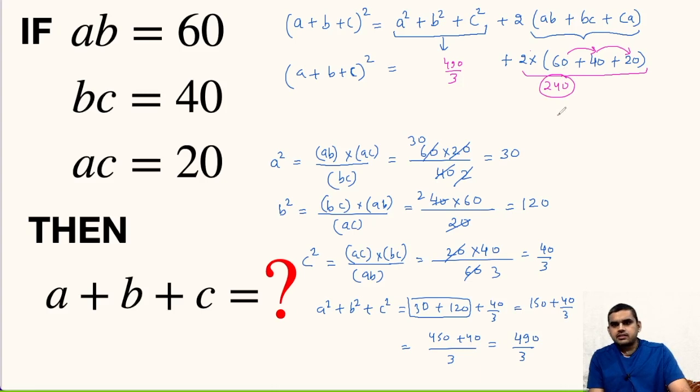We got on RHS 490 upon 3 plus 240. Again we can take LCM here. This will be 490 plus 240 times 3, 720. This is 1210 upon 3.